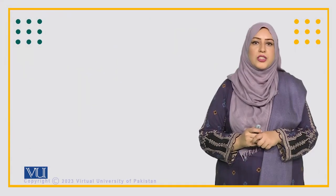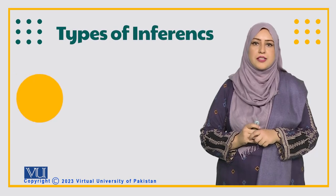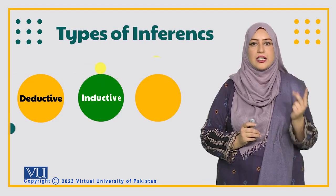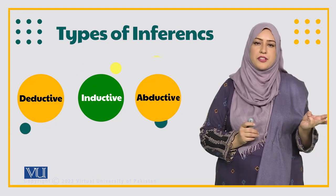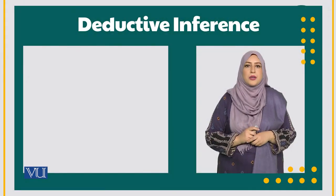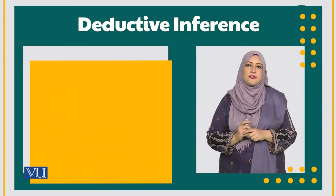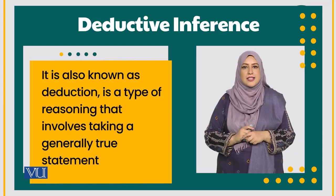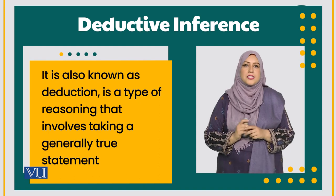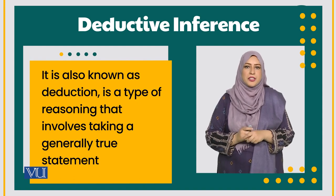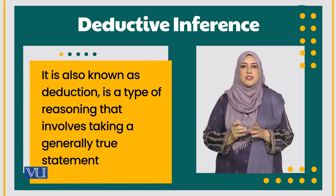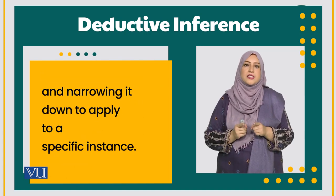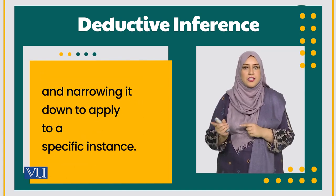Now we will look into the types of inference. There are basically three types of inference: deductive, inductive, and abductive inference. A deductive inference is also known as deduction, and it is a type of reasoning which requires general true statements and then narrowing it down to apply to a specific situation.